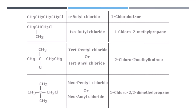Looking at another example: the longest chain has four carbon atoms. The compound is named 2-chloro-2-methylbutane. Note that chloro is written before methyl because we follow alphabetical order — 'c' in chloro comes before 'm' in methyl in the English alphabet. These examples illustrate how we give IUPAC names to haloalkanes.